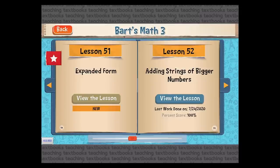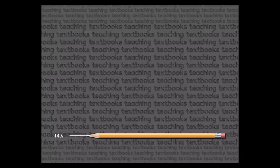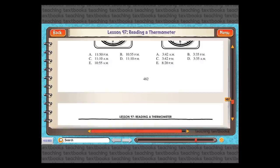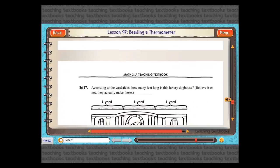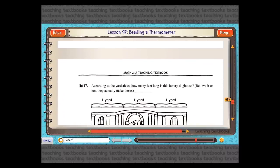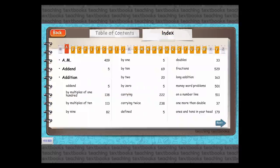Now let's go back to the student home screen. I'm not going to spend too much time on the eBook, but I'll show it quickly. The eBook is pretty similar to the 3.0 eBook but has some improved features — the search feature is better than the 3.0. Here's the table of contents and the index.